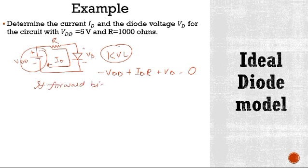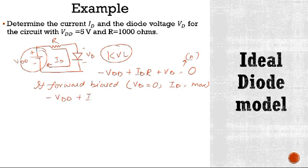Now if this ideal diode is forward biased, it means Vd is equal to 0 and Id is max. So now this equation will become minus Vdd plus Id R equal to 0. So Id is equal to Vdd upon R.